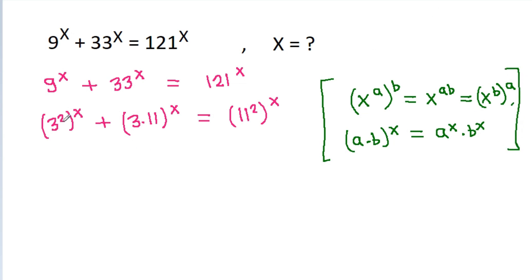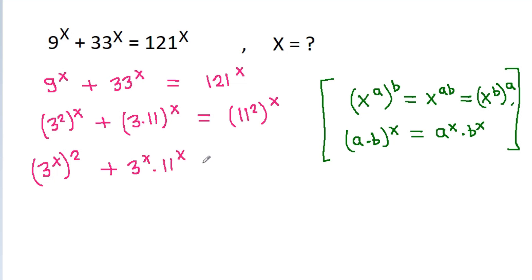Applying these rules: (3²)^x becomes (3^x)², and (3·11)^x becomes 3^x · 11^x, and (11²)^x becomes (11^x)².